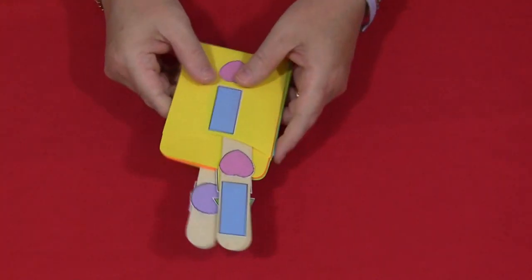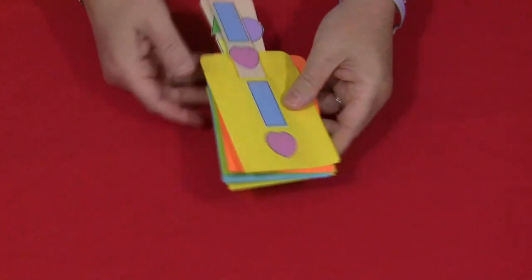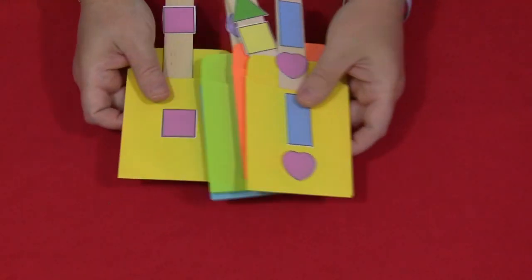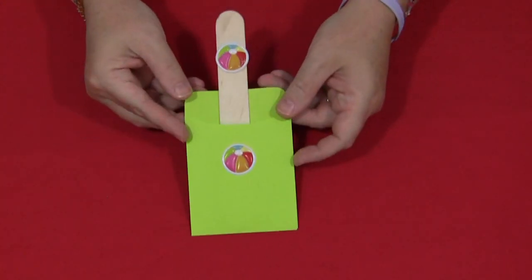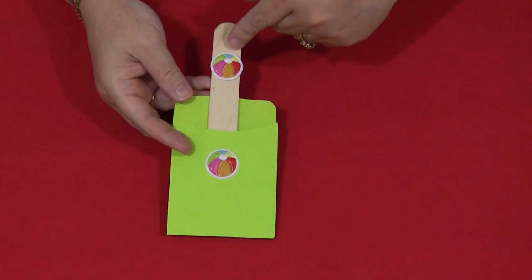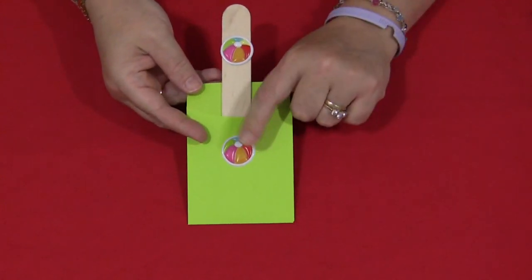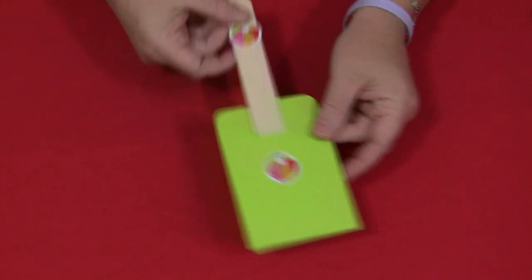You don't have to be limited just to shapes for library pockets at all. You can have just for maybe younger children you can have just sticker matching. This is just a beach ball sticker on the jumbo craft stick and a beach ball sticker on the library pocket.